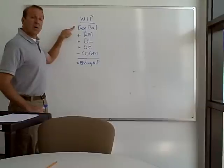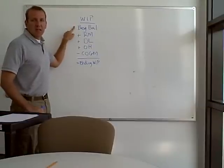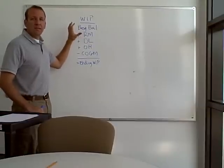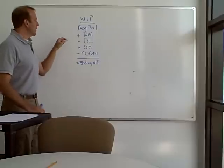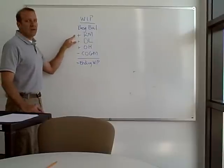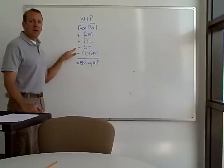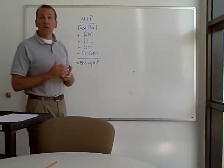Remember, with work in process, we're going to have a beginning balance — these are the items that were already in there when we started the period. During the period, we're going to add raw materials, direct labor, and overhead to manufacture our product.